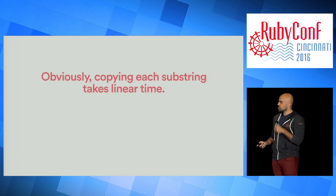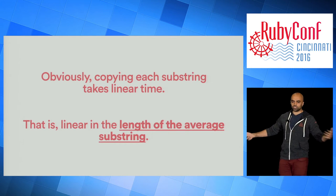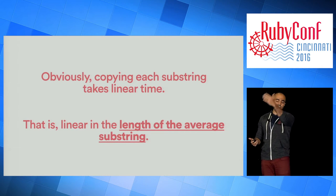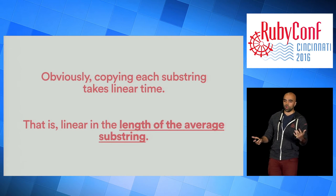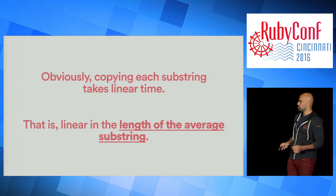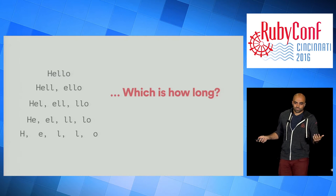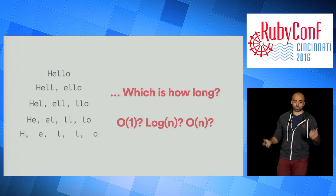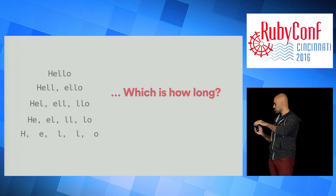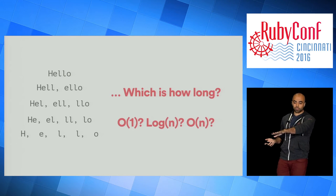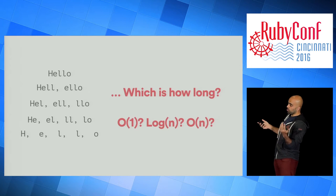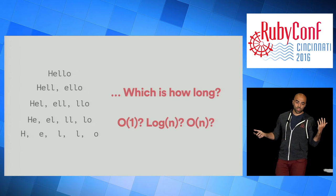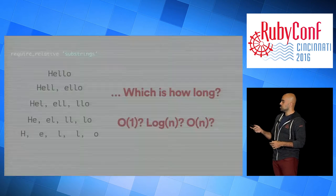Obviously, copying a substring takes linear time in the number of characters. But when thinking about each substring, it's linear in the length of that average substring. If we don't know how large the average substring is, we don't know how long it takes to collect all substrings. Looking at this pyramid of substrings, it's not obvious what the average length is — could it be dominated by tiny ones, could it be logarithmic, or linear? It's not obvious, so let's figure it out.